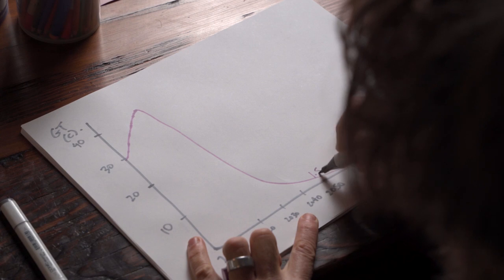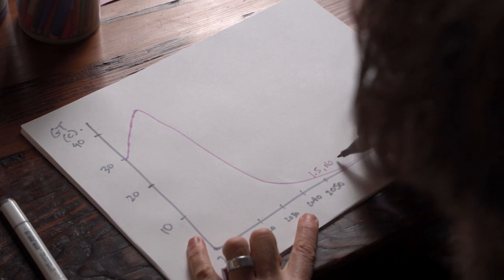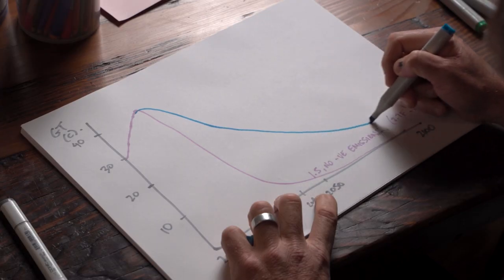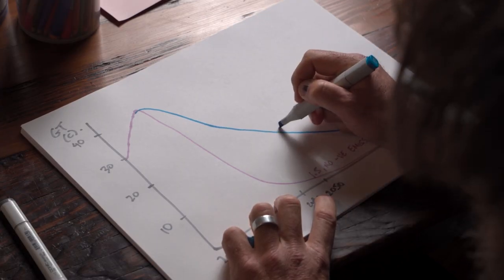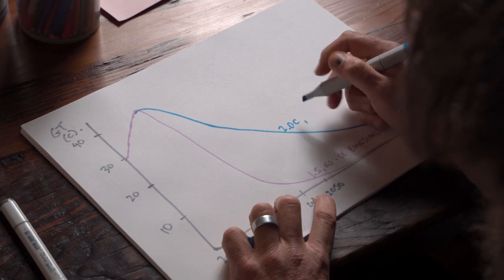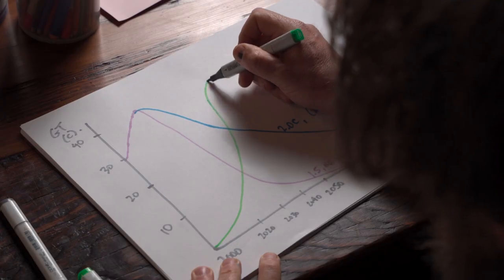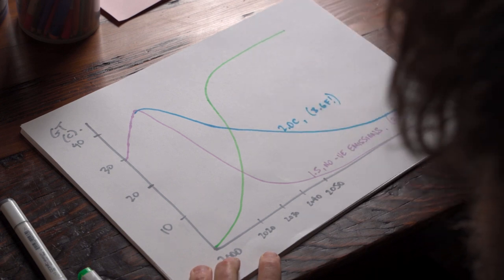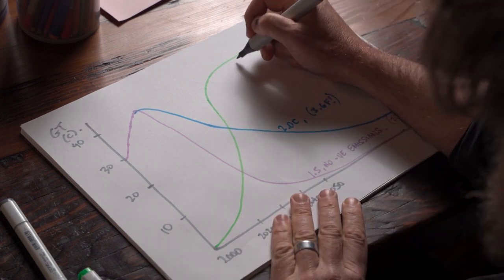But you can see here, if we project forward the rate of those renewables being deployed, along with some nuclear, we can be all electric by 2040 or 2050 and zero emission. We may not be as fucked as you think.